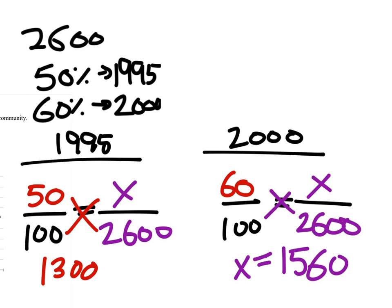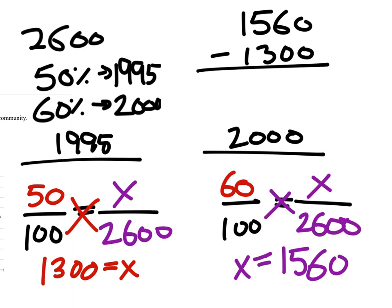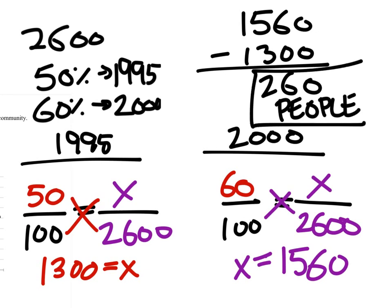So in 1995, it was 1,300 people. In 2000, 1,560. So how many more people in 2000? We'll just take those two numbers and find the difference between them. And that gives us 260 people, just like we found before. So you get to decide which way you prefer. That's all just percentage work, which is from a previous unit. So hopefully it's not too bad. Thank you.